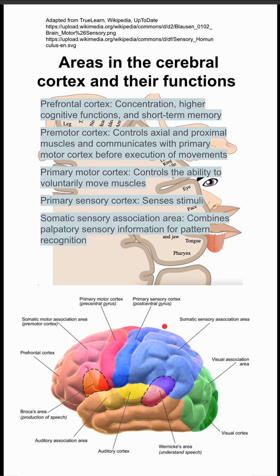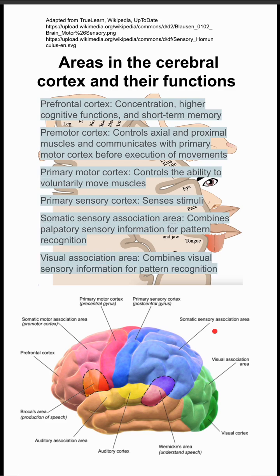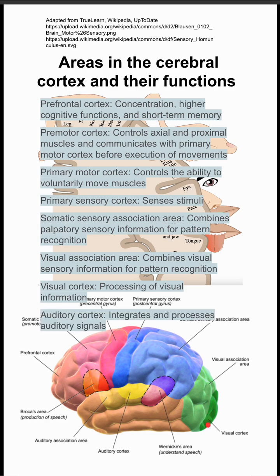The somatic sensory association area combines palpatory sensory information for pattern recognition. The visual association area combines visual sensory information for pattern recognition. The visual cortex in the back is for processing of visual information.